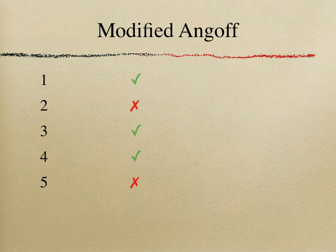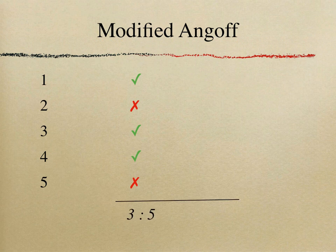You look at all five items and judge: the first one they can probably answer, the second no, the third yes, the fourth yes, the fifth no. So three out of five can be answered by a borderline candidate, giving a pass mark of 60%. That's how you set your 60%.